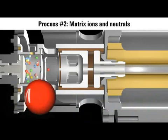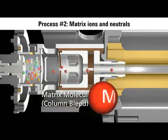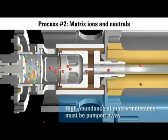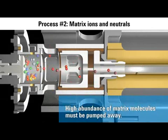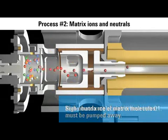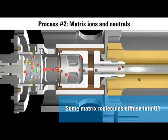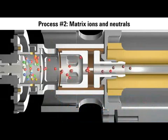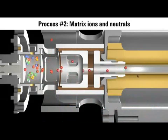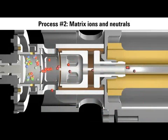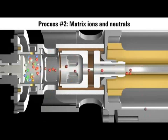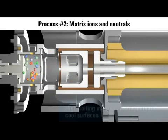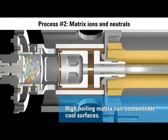Again we ask: what about the large population of non-ionized molecules? Although the turbo pump removes many neutrals quickly, some will randomly diffuse into the quadrupole. At the end of the GC separation, the EI source will be flooded with the highest boiling molecules from the sample matrix. Even in a vacuum, these high-boiling molecules can contaminate surfaces in the mass spectrometer.